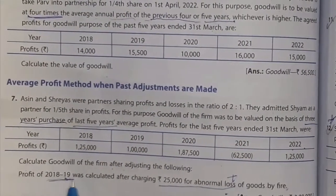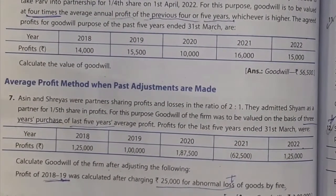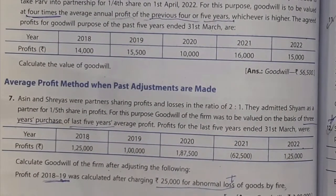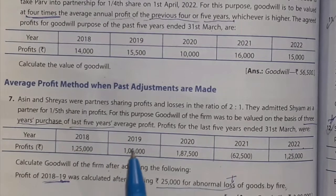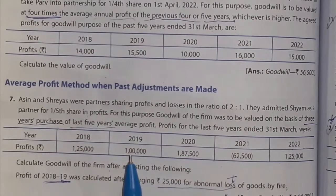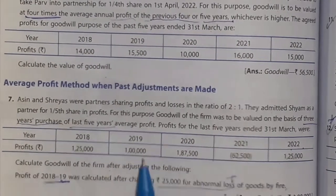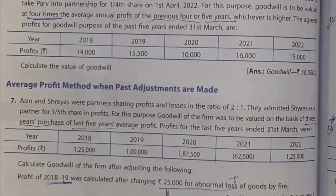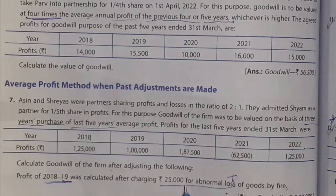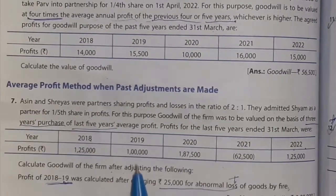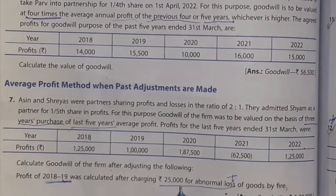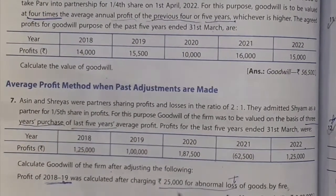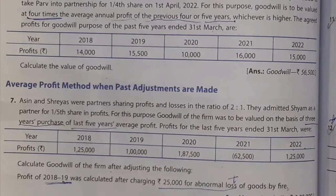We are adjusting years 2018 and 2019. For 2018, we add 1,25,000 plus 25,000. For 2019, we add 1,00,000 plus 25,000.